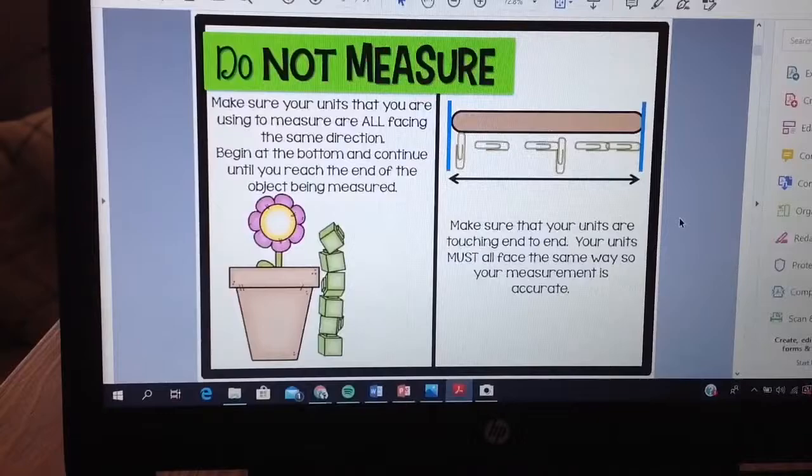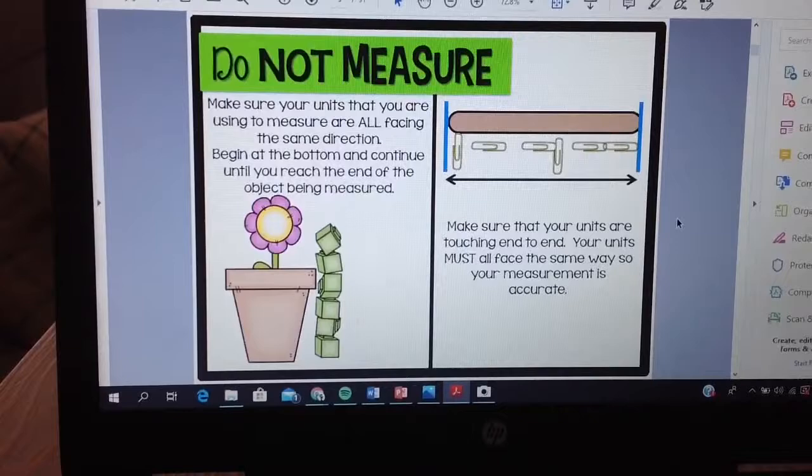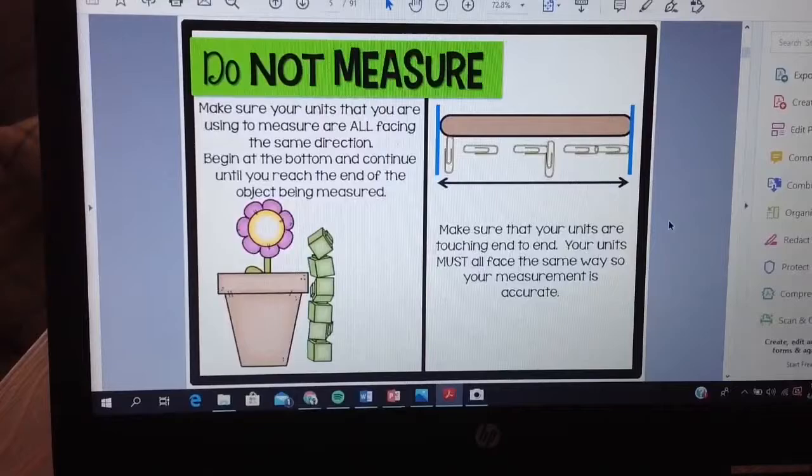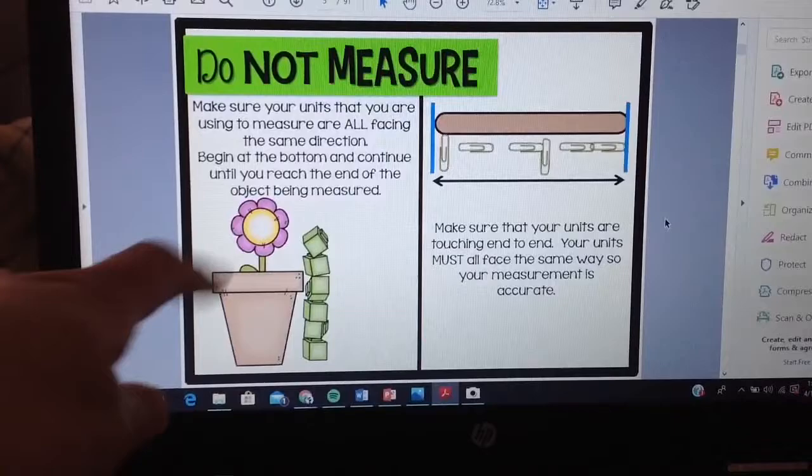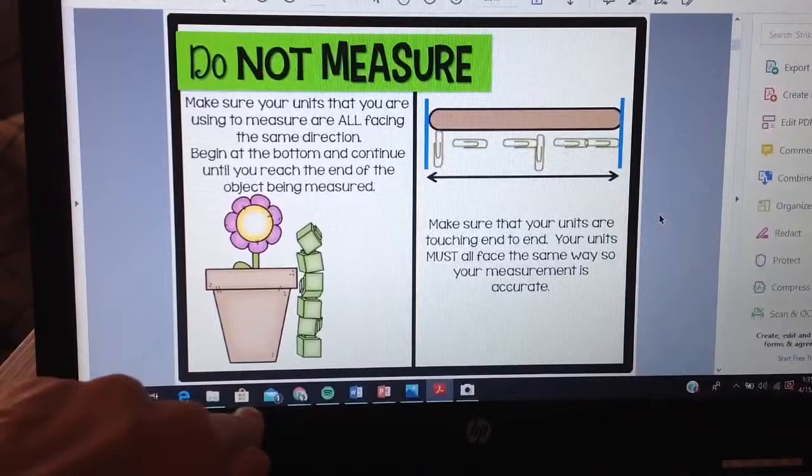So over here it says make sure your units you are using to measure are all facing the same direction. Are these blocks or are these cubes facing the same direction? No they're not. It says beginning at the bottom and then continue until you reach the end of the object being measured. So sometimes first graders would want to start at the top but it's saying to us in order to measure we need to start at the bottom. They did do that correctly.